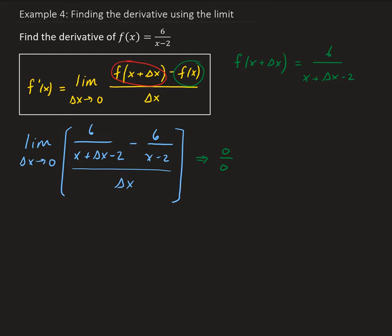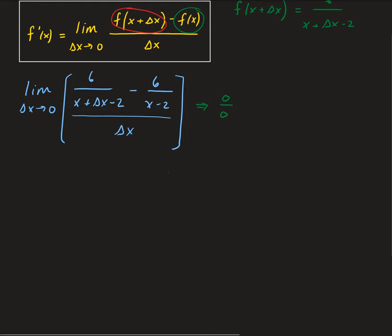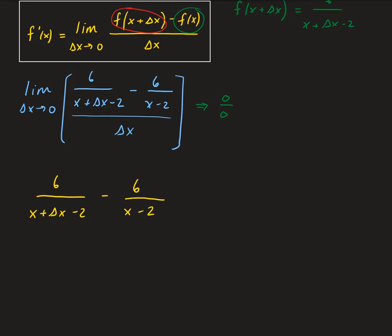What we have here is a compound fraction — a fraction within another fraction. We need to simplify this by finding a common denominator. I'll simplify the numerator first. We have 6 over x plus delta x minus 2, minus 6 over x minus 2. We need a common denominator, so I'm going to multiply the first term by x plus delta x minus 2.